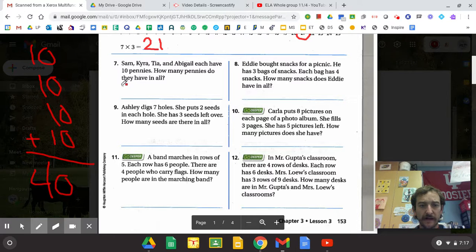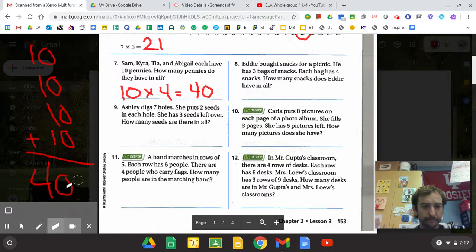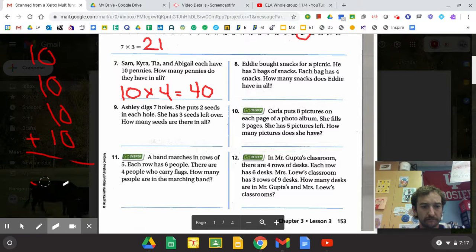And the way that looks as a multiplication problem is ten pennies times four groups equals forty.